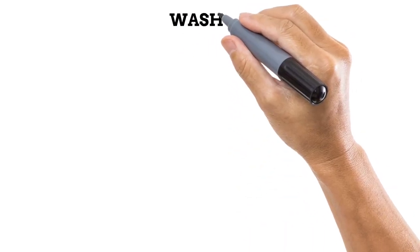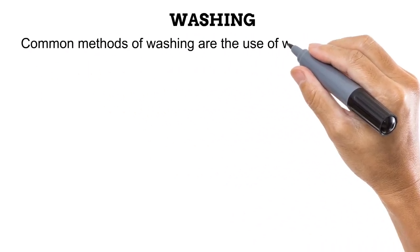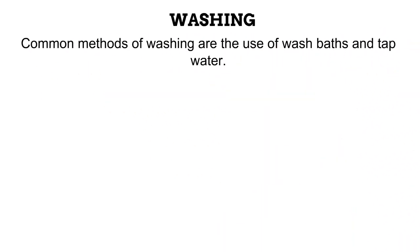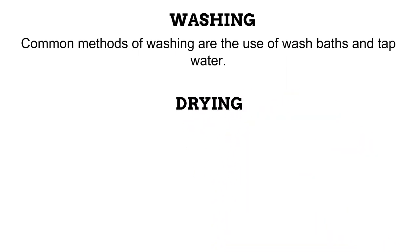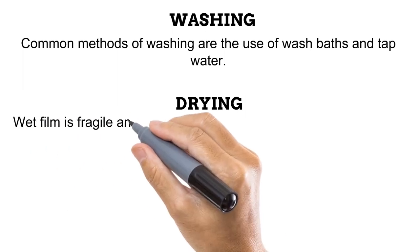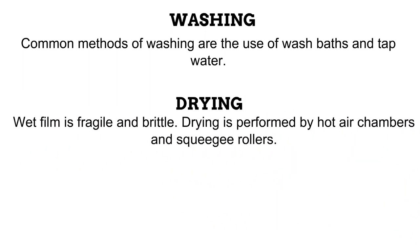When some fixer solution is left on the surface of the radiographic film, it is known as fixer retention, which would at some point cause the radiograph to have a yellow-brown stain. This is why washing of the film is done after fixing — to get rid of the fixer solution and all byproducts of fixing. Common methods of washing include the use of wash containers or baths and taps. And it doesn't stop at washing. A wet film is also very fragile and brittle, so drying is performed by hot air chambers and squeegee rollers.